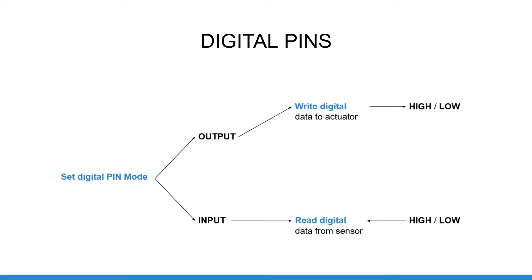Before you actually use a digital pin, you need to configure its mode. A digital pin can either be in input mode or output mode. When in input mode you will use it to read data; when in output mode you will use it to write data. After you've set a mode for the pin — usually in the setup function of your Arduino program with pinMode — you will be able to read or write the state of the pin with digitalRead or digitalWrite. The state high and low correspond to 5 volt for high and 0 volt for low.